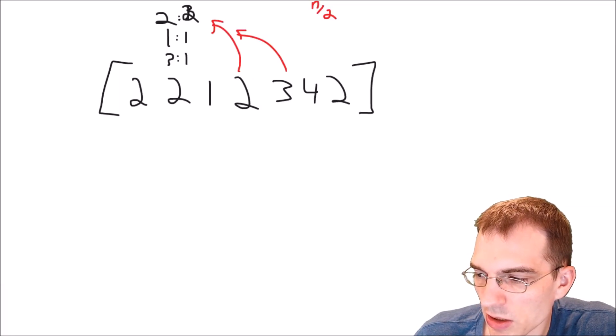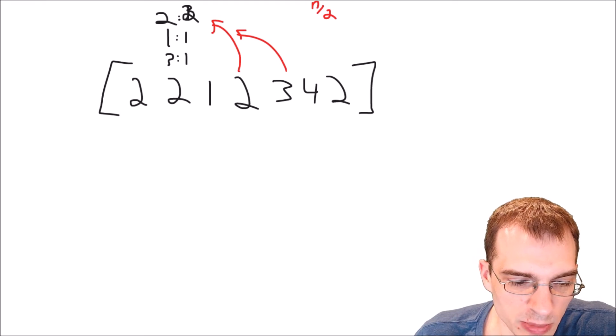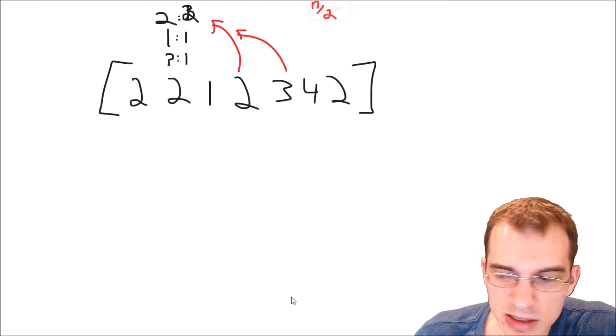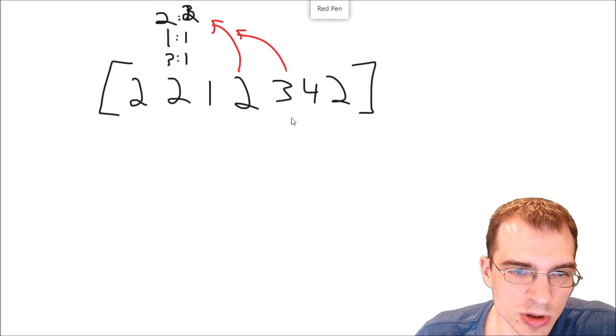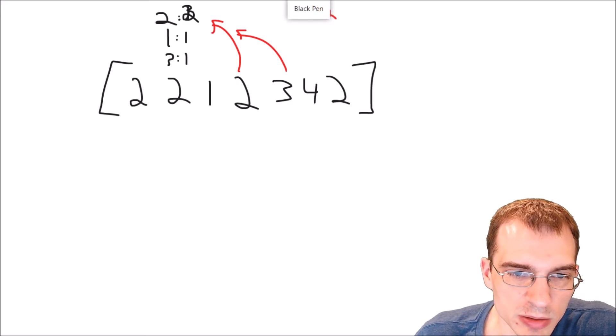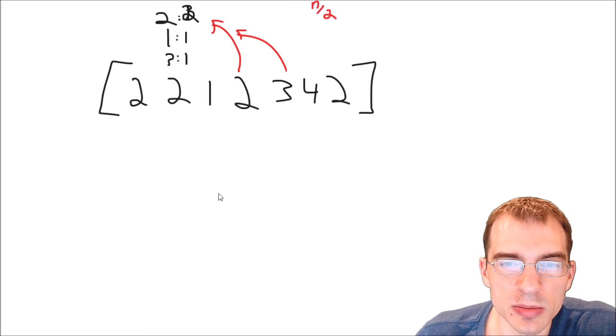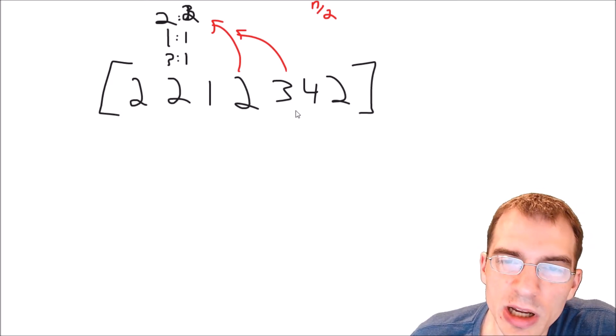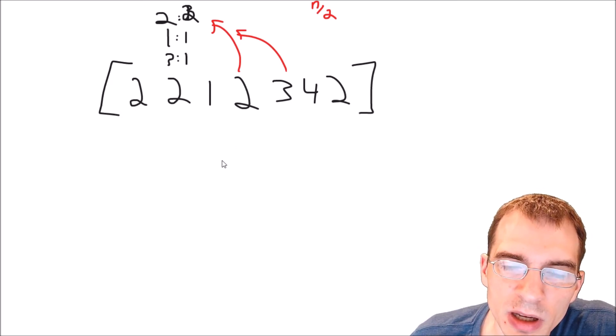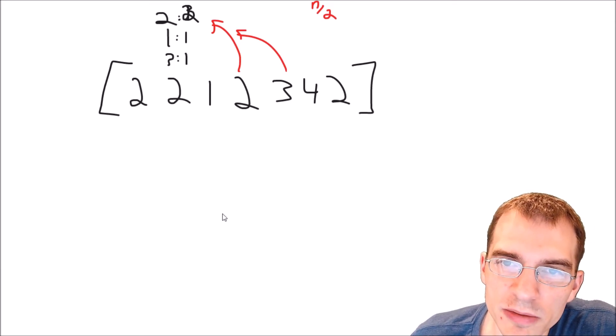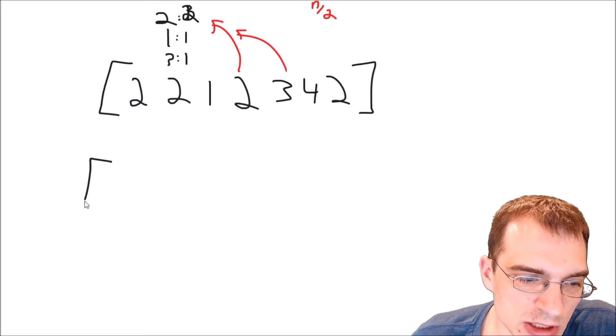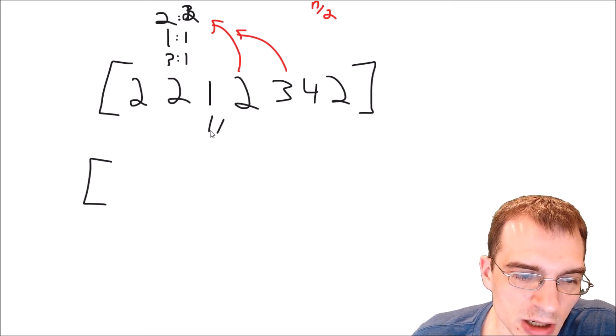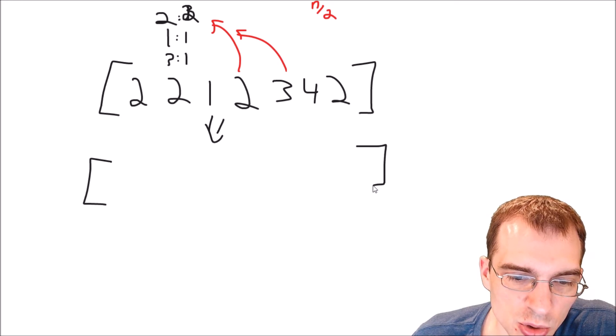So one insight we could have here where we could make a different solution that is easier in terms of code. It'll actually be worse in terms of runtime. But the nature of this problem means that if we sort any array that we're given, then the majority element is going to exist at the middle of the array. For instance, if we take this array that we did in our last example and sorted it,